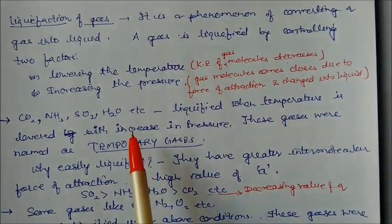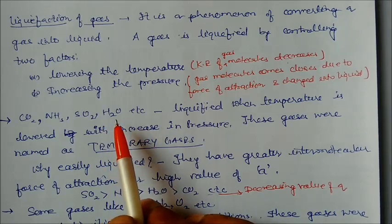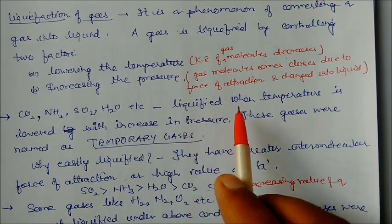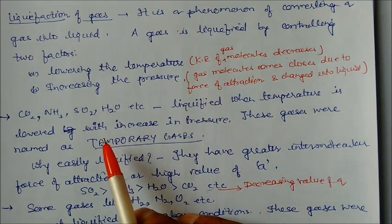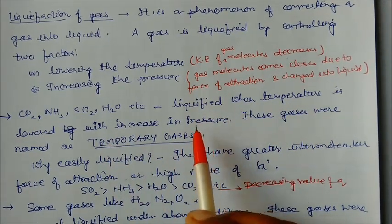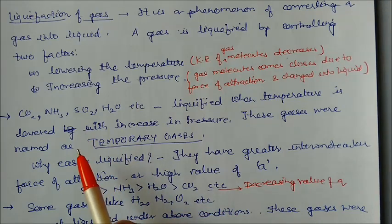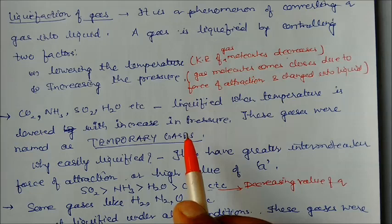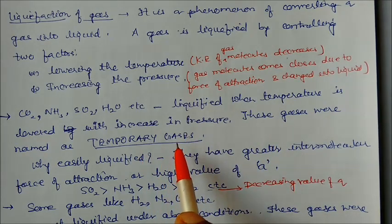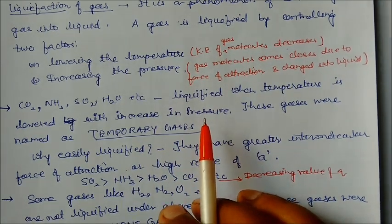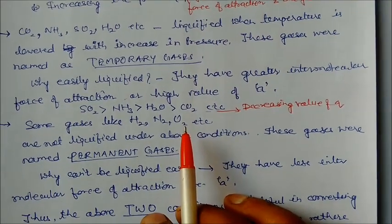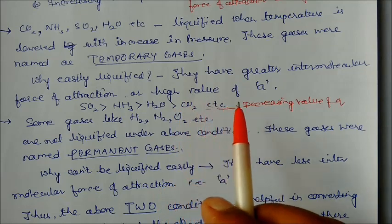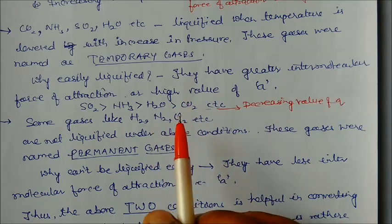Carbon dioxide, ammonia, sulfur dioxide, and water — these gases in gaseous form are easily liquefied when temperature is lowered and pressure is increased. These gases are called temporary gases. Why are they easily liquefied? Because they have greater intermolecular force of attraction.